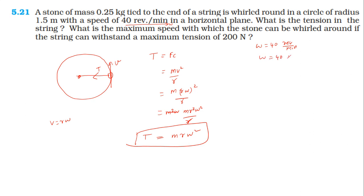Converting units: 1 revolution per minute equals 2π/60 radians per second, since 1 revolution equals 2π radians and 1 minute equals 60 seconds. So 40 rpm equals 40 × 2π/60 radians per second.